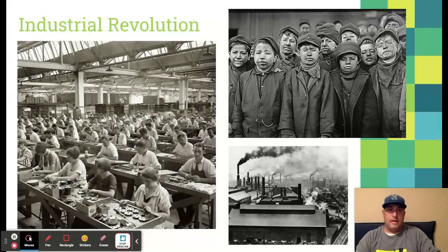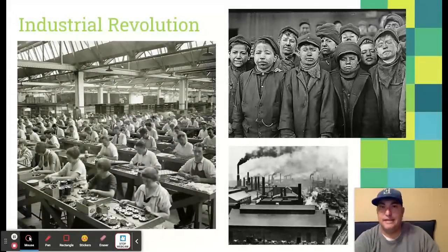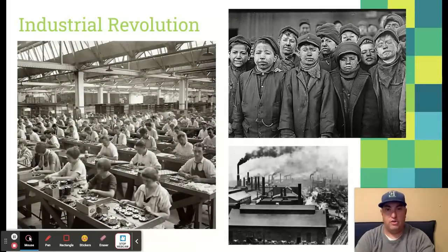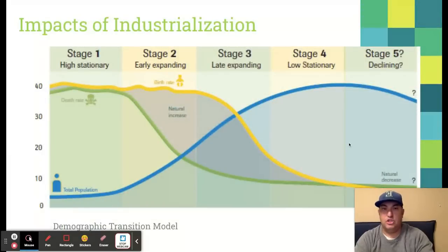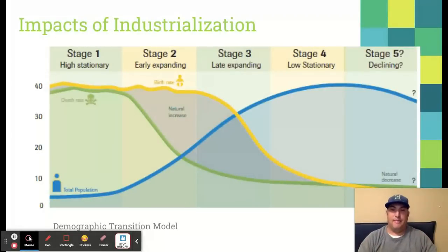Unit 7 is all about industrial and economic development, and one of the things I love about Unit 7 is that there's a lot of review in this unit. We've been talking about the Industrial Revolution since Unit 2 when we talked about the demographic transition model. The Industrial Revolution was critical to the effects that we see in the demographic transition.